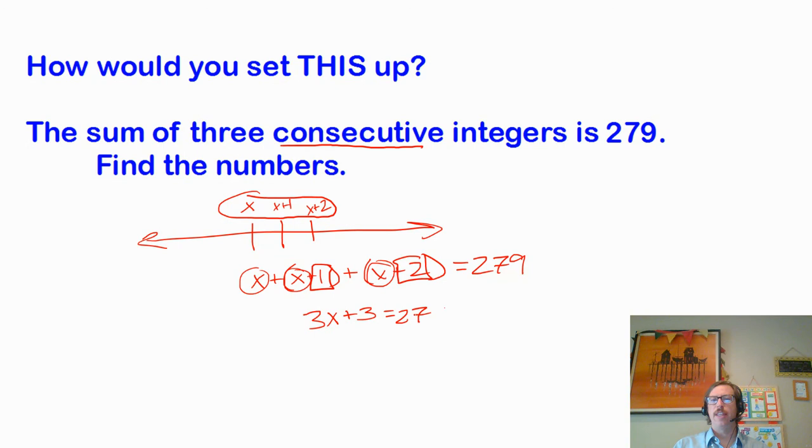So think to yourself, how would you do the sum of three consecutive even integers is something. Let's say it was three consecutive even integers. Oh, I can't do it in my head. Three consecutive even integers. Well, we would say X is the first one. X plus 2 is the next one, because that would make the next even integer. And X plus 4 is the next even integer. So if we add those up, we could add those up, and we would be able to solve the problem and find out that the first one of those numbers is 8, 10, and 12 would give us the sum of 30.